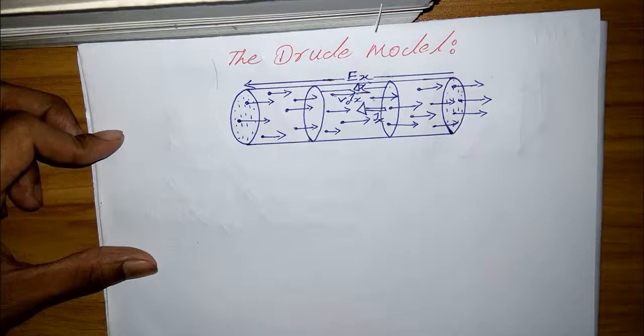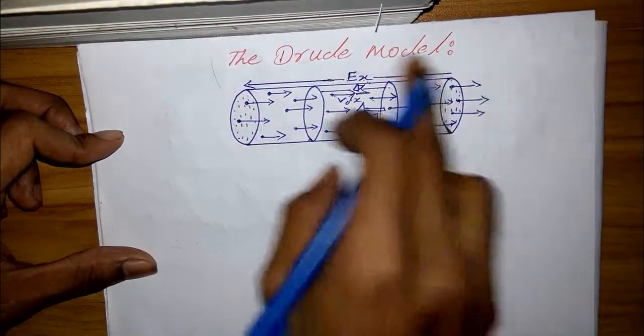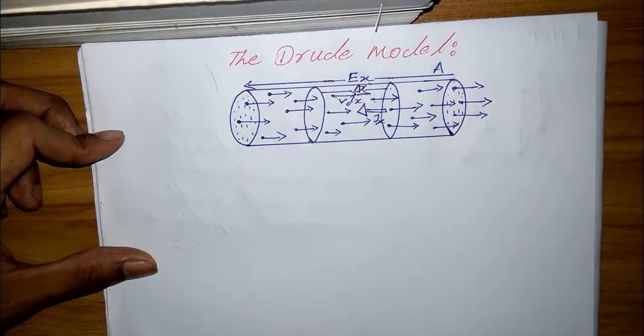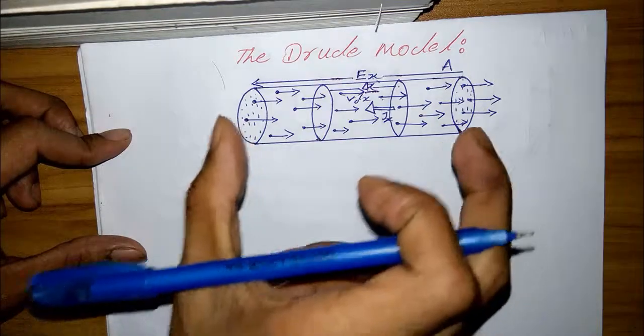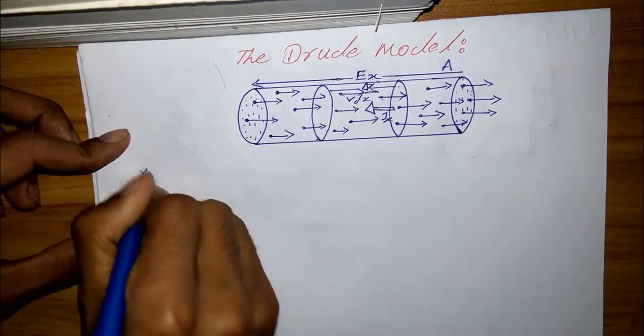There will be no net flow across area A. So the electric current density through area A, there is no net flow across. So the electric current density through A or area.